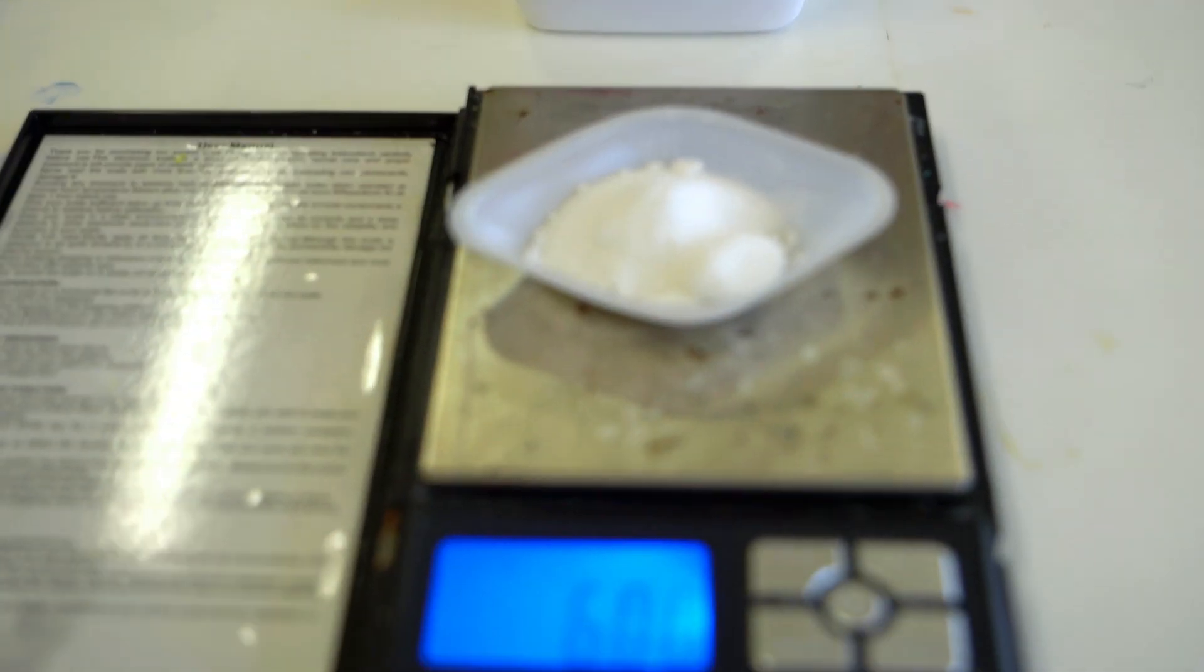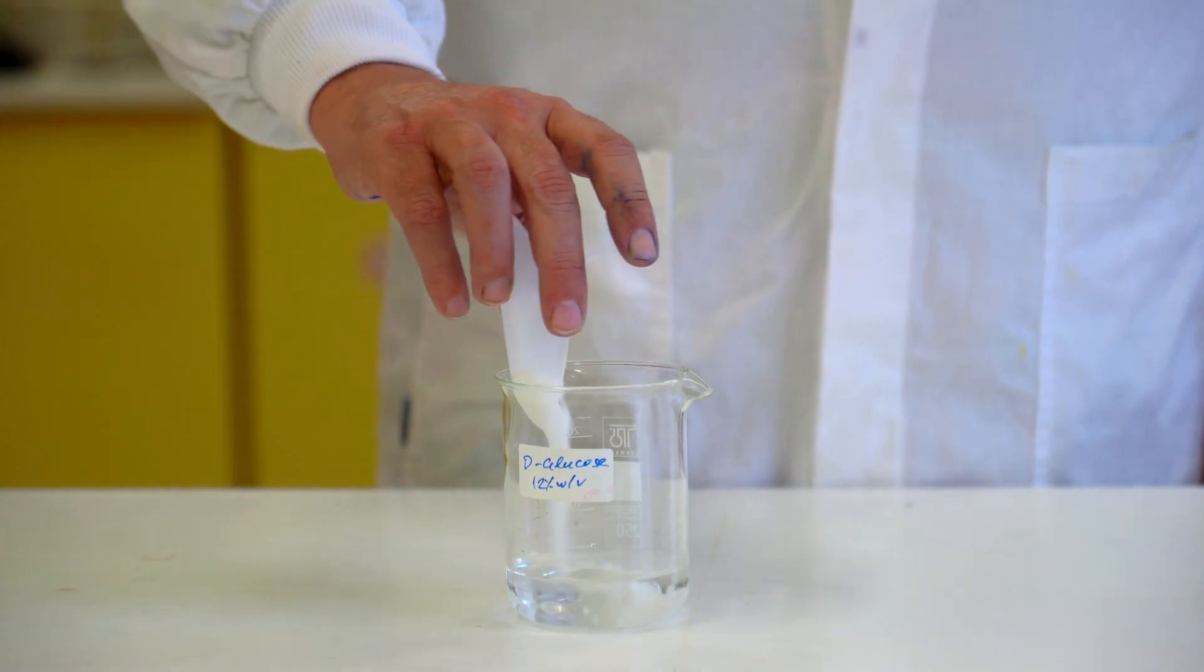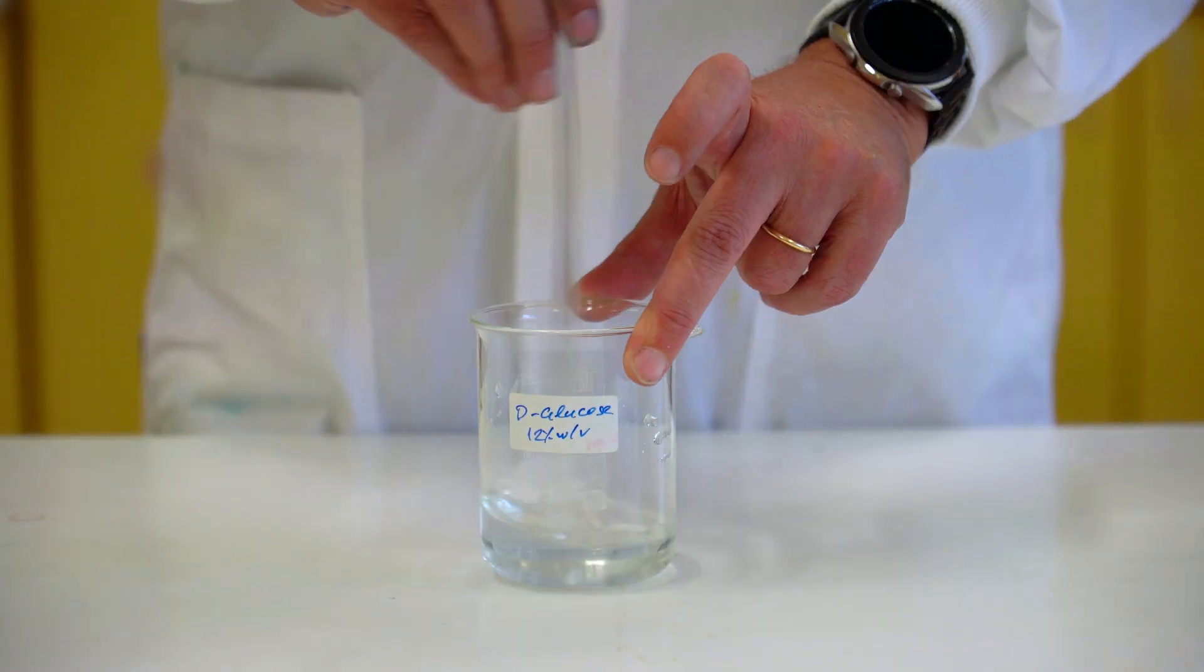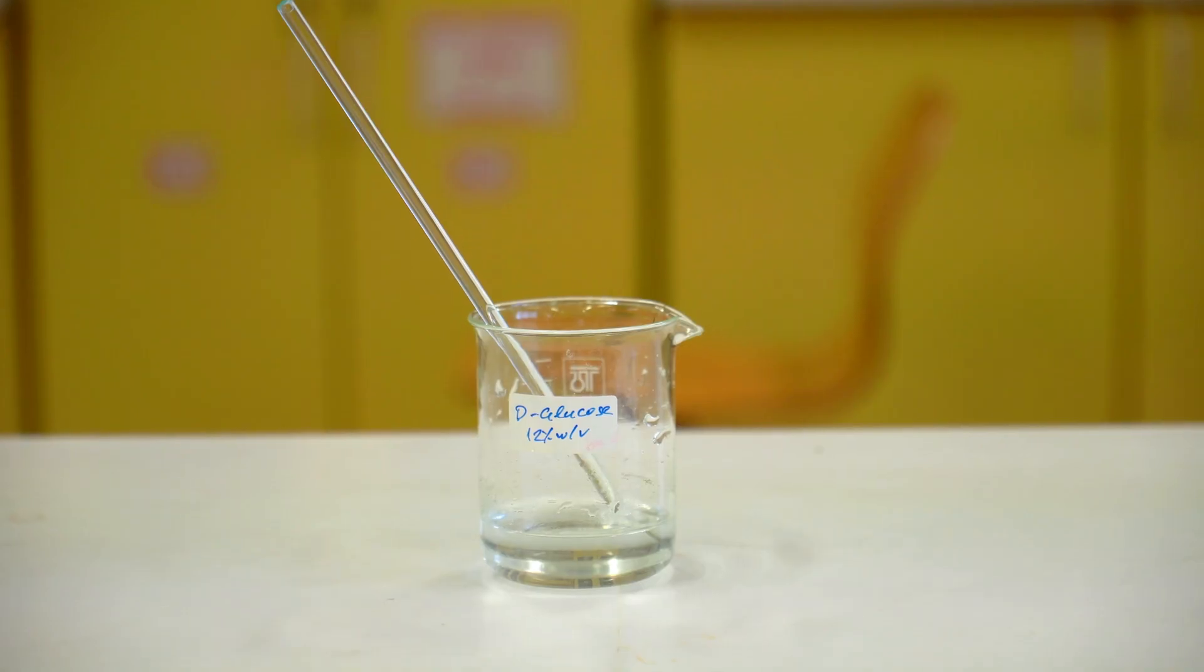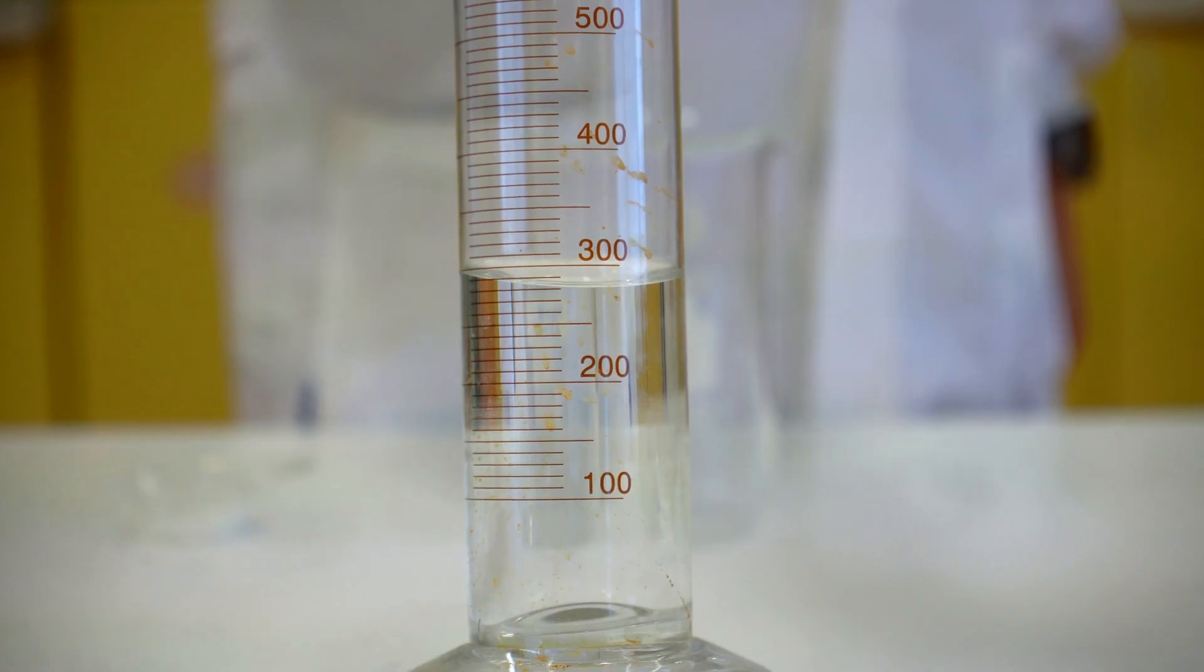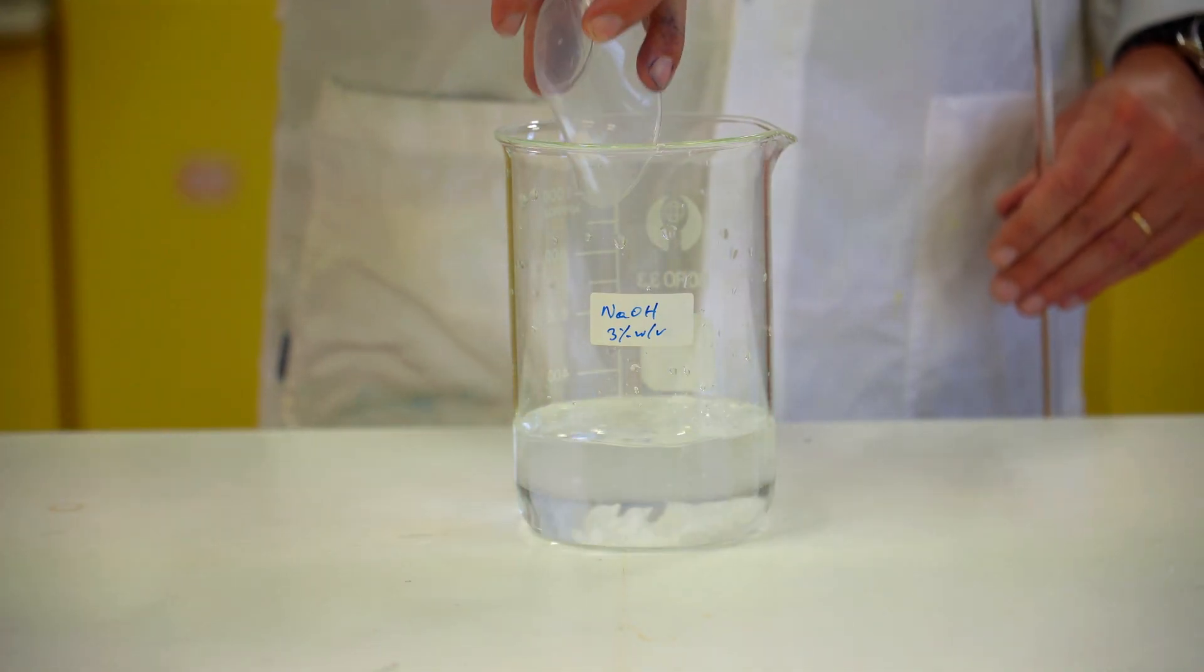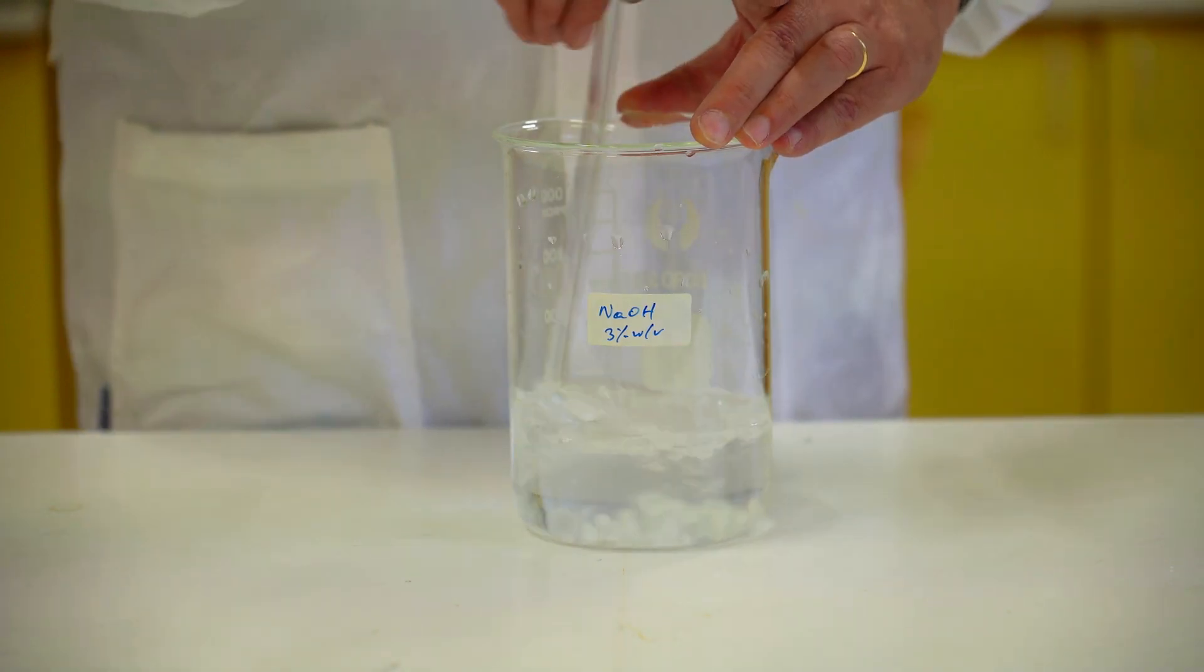Then we prepare a 12% weight per volume glucose solution. Glucose is a reducing agent that favors conversion of indigo carmine to its reduced yellow form. This reaction takes place in alkaline conditions. Therefore, we prepare a 3% sodium hydroxide solution.